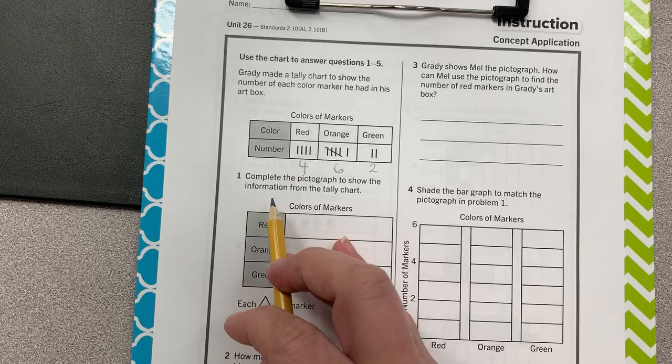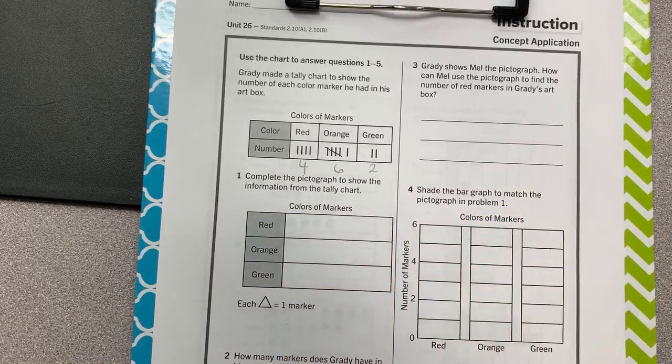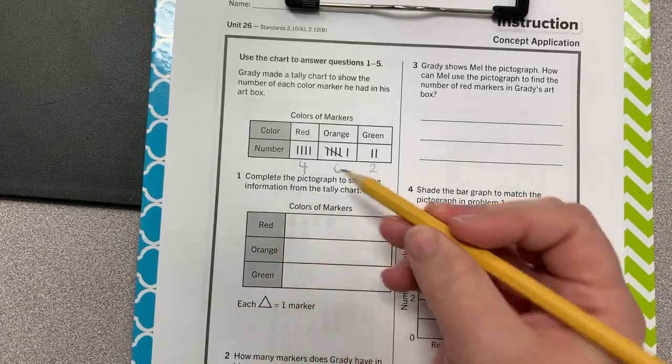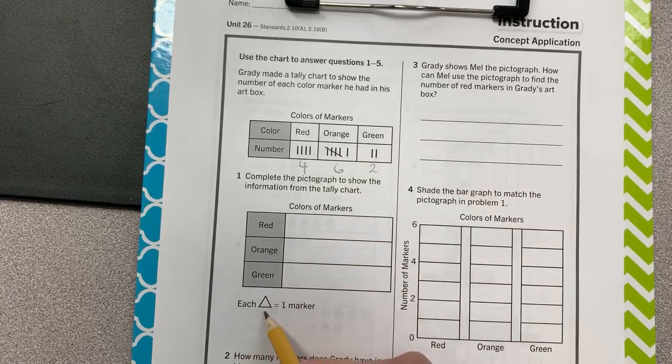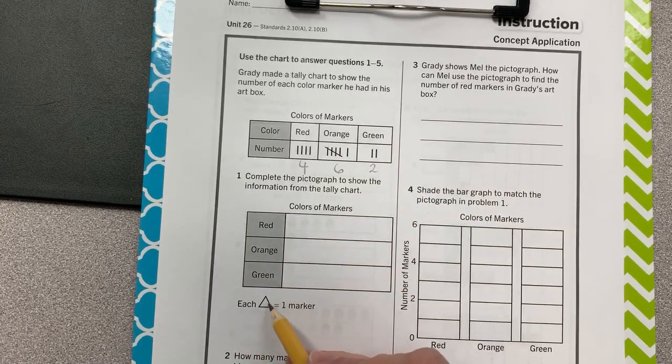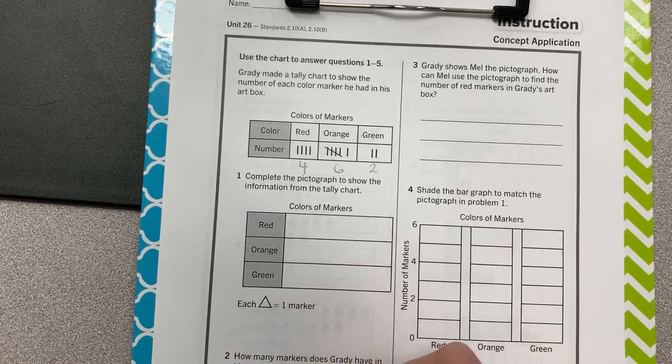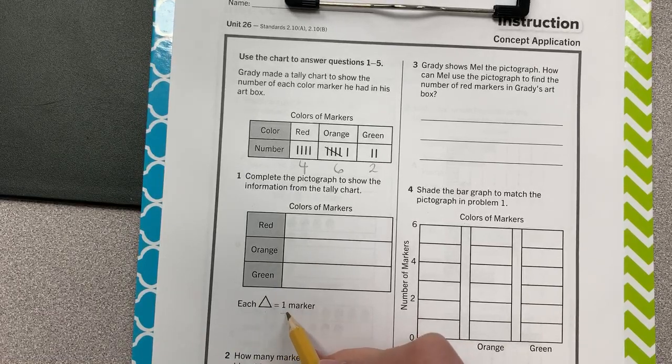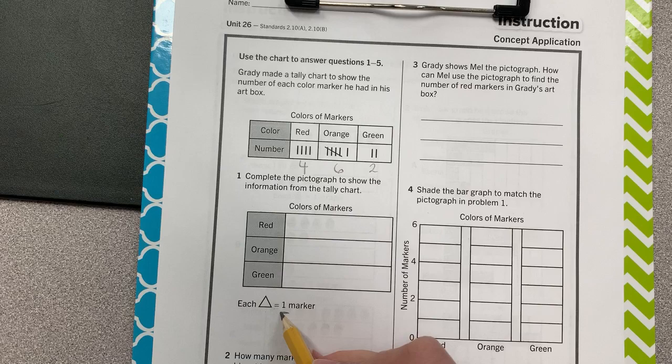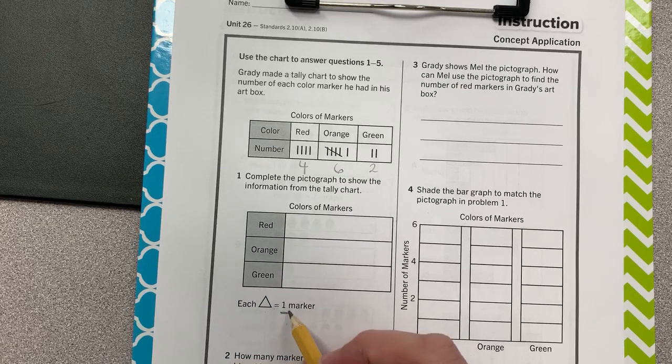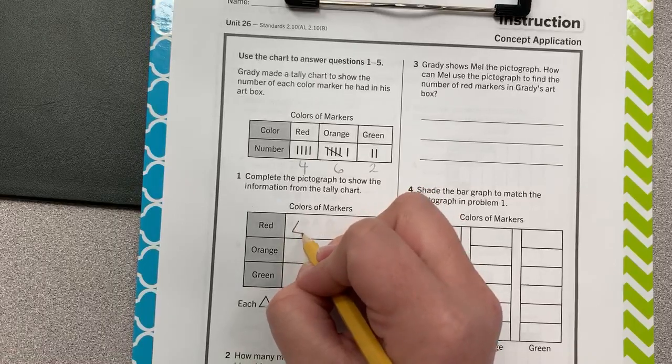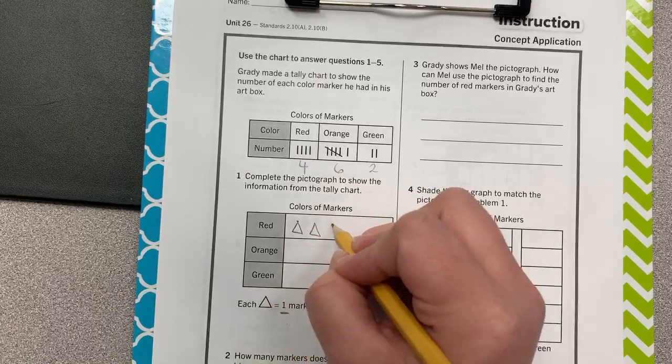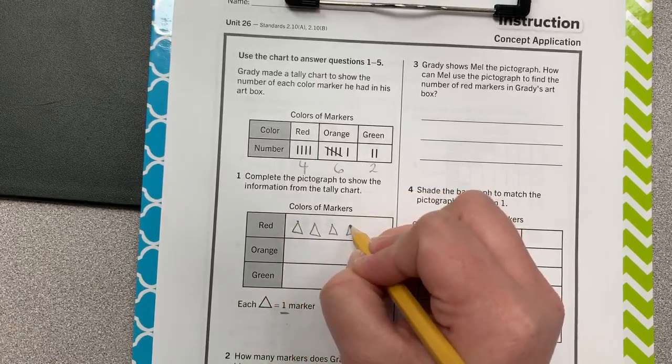Complete the pictograph to show the information from the tally chart. Title, colors of markers. Here's our labels: red, orange, green. Each triangle equals one marker. So we're using triangles to represent each marker and we're doing one is our interval that we're counting by. So red, we need four. So one, two, three, four.